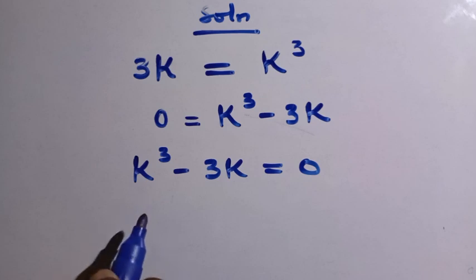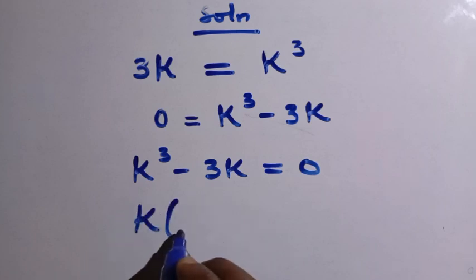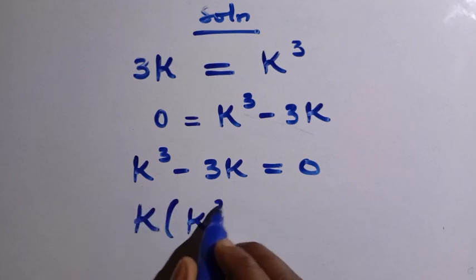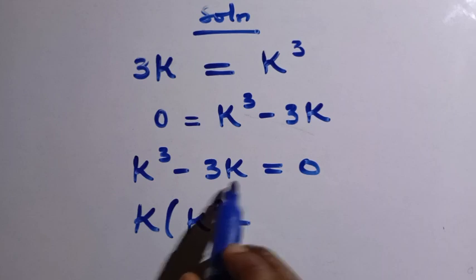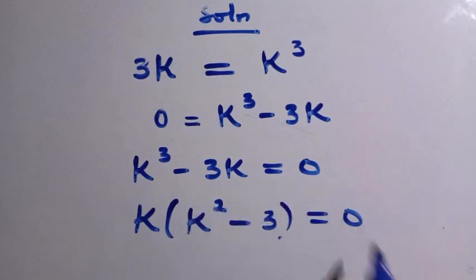Then here is a cubic equation; we need three answers to this. So what I will do here is suppose I factor out K from here, so we have this as K into bracket of. We divide this sum by K, we have K raised to the power of 2 minus, and we divide this sum by K, we have 3 equals 0.